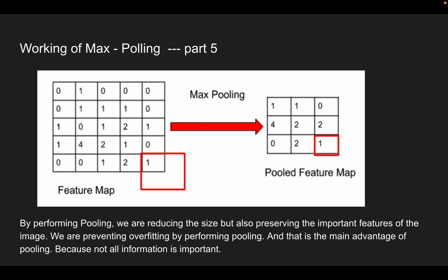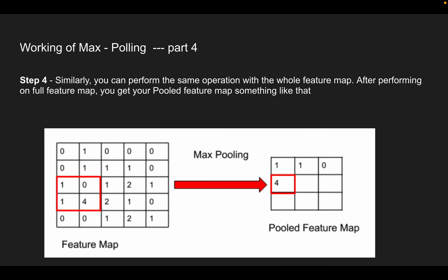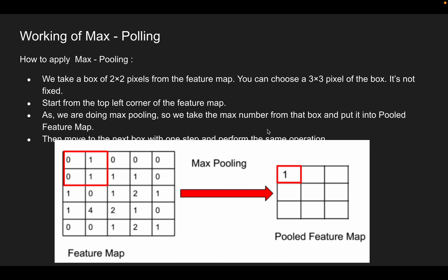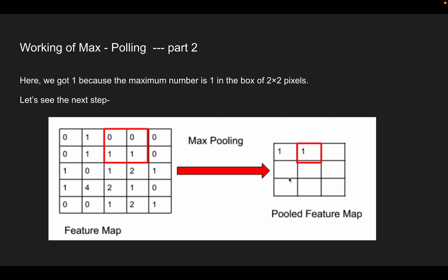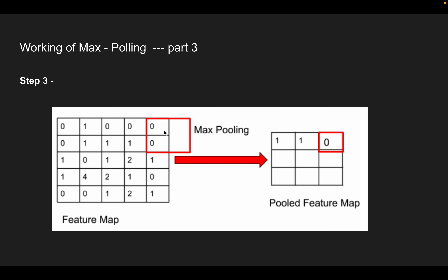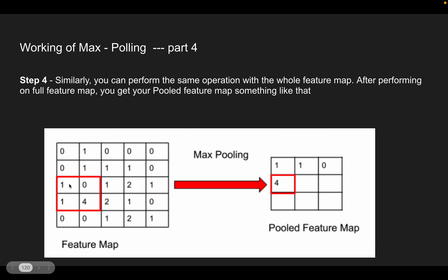Max pooling is really easy once you understand convolution. Similarly, average pooling takes the average of each 2x2 region — for [0,1,0,1] the average is 2/4 = 0.5. For [0,0,1,0] the average is 0.25, and for [1,0,1,4] the average is (1+0+1+4)/4 = 1.5. Sum pooling simply takes the sum without dividing — for [1,0,1,4] the sum is 6. So max pooling, average pooling, and sum pooling work the same way but differ in how they aggregate the four values.